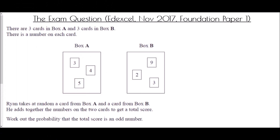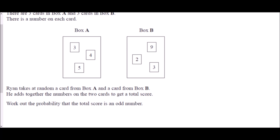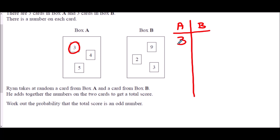We end with an exam question from the Edexcel Foundation Paper 1, November 2017. There are three cards in Box A and three cards in Box B. Box A has 3, 4, and 5; Box B has 9, 2, and 3. Ryan takes at random a card from each box and adds the numbers to get a total score. We need the probability that the score is an odd number. Using systematic listing: if 3 is selected from Box A, it could be matched with 9, 2, or 3 from Box B.